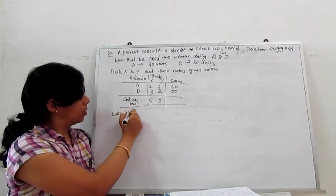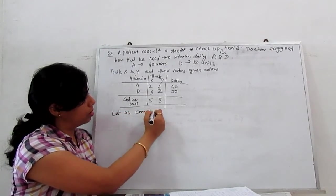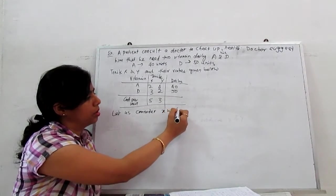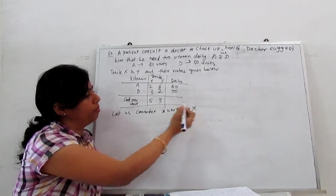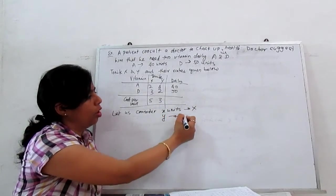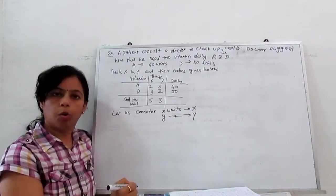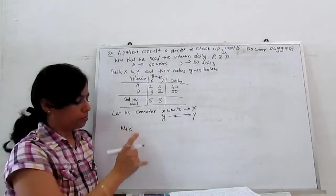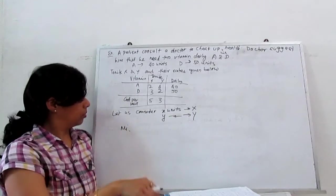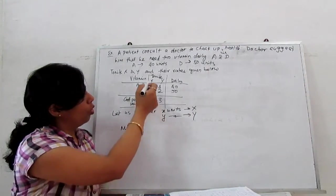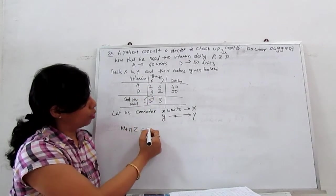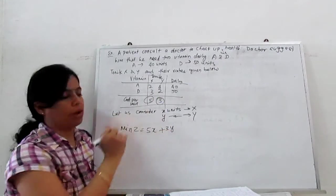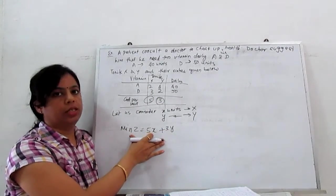So for that we construct a minimize model of LPP. Let us consider the patient buys X units of tonic X and Y units of tonic Y. Then our objective function is: minimize Z = 5X + 3Y, where tonic X costs $5 and tonic Y costs $3. This is our minimize function.